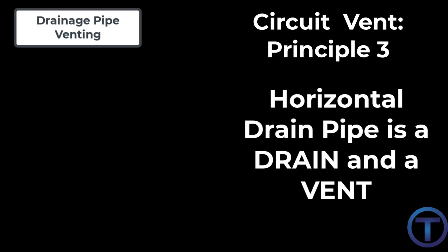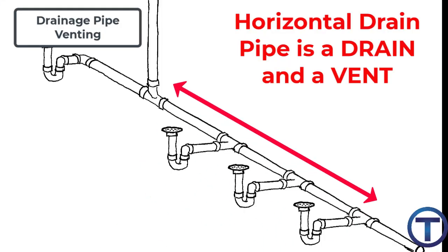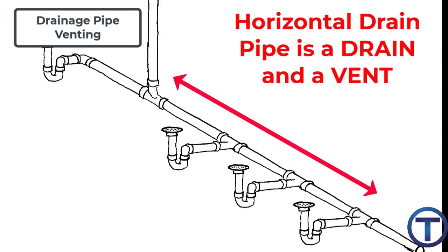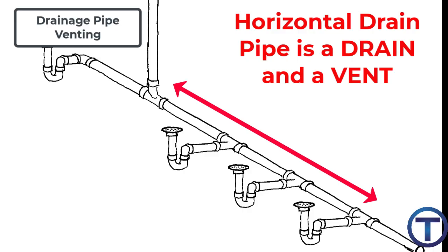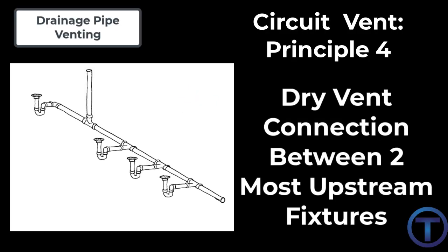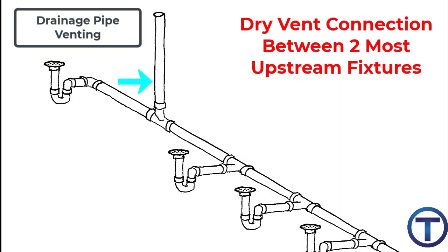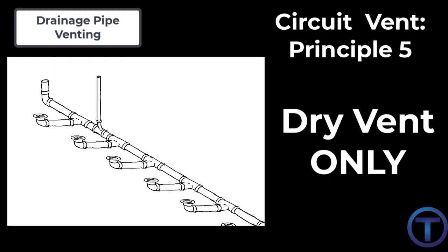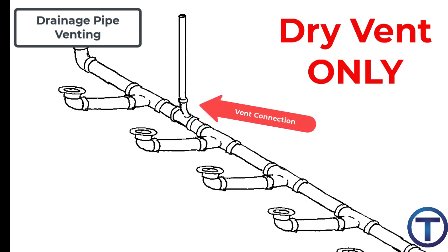Circuit vent principle three: the horizontal drain pipe is considered both a drain and a vent from the most upstream fixture where the vent is connected to the most downstream fixture in the circuit. Circuit vent principle four: the circuit vent connection to dry vent must be between the two most upstream fixture drains.